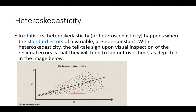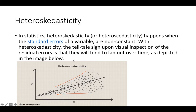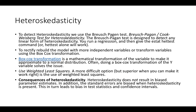Heteroscedasticity is the assumption that states the error term is normally distributed with mean 0 and standard deviation sigma. When there is heteroscedasticity in the data, the error terms tend to fan out. A plot of the residuals against the independent variable showing this fan shape is indicative of heteroscedasticity. In statistics, heteroscedasticity happens when the standard errors of the variable are non-constant — the variation at every point of X is not the same; it is increasing or decreasing. It can be detected by inspecting the errors or by the Breusch-Pagan or Cook-Weisberg test of heteroscedasticity.